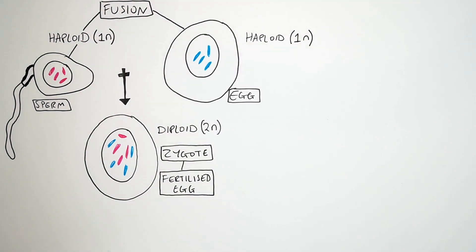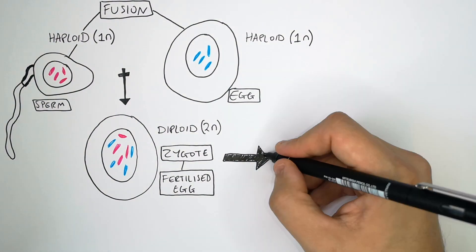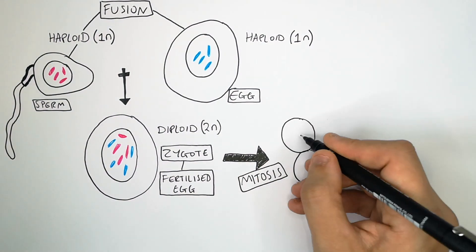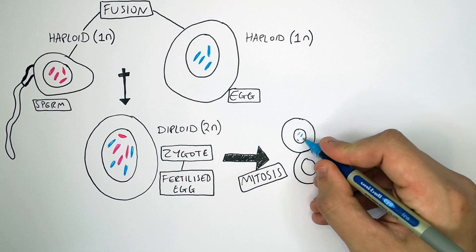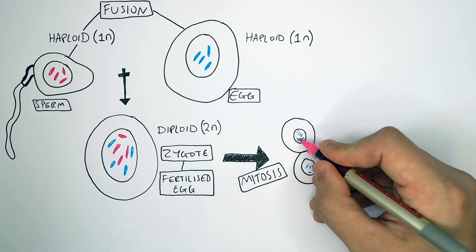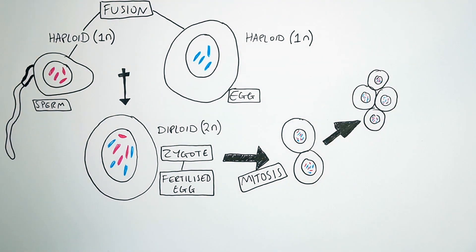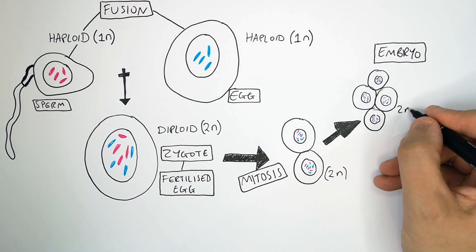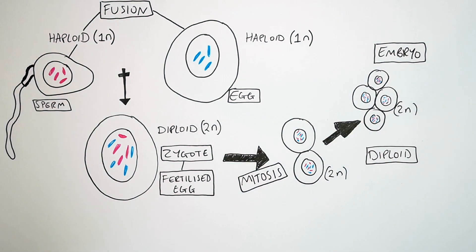The zygote will then divide to form an embryo by mitosis. So it divides to form two diploid cells, which then forms four and so on, and an embryo forms. So a zygote is going to form an embryo and all of these cells are diploid, 2n diploid.